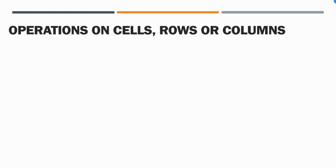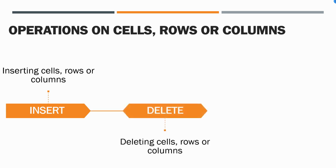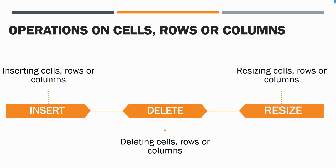The first topic we are going to learn is what operations we can do on cells, rows, or columns. First, we can insert a row, a column, or a cell. We can also delete a row, cell, and column. And then we can even resize the cell, row, and column. These are the operations we can do on cells, rows, and columns. Now I will take you to the Excel screen and teach you how to insert, delete, and resize.